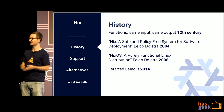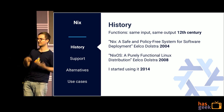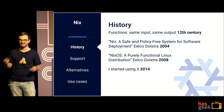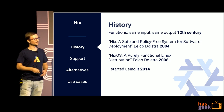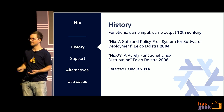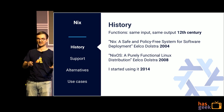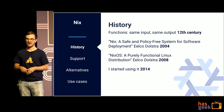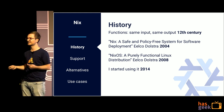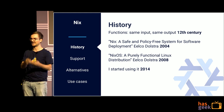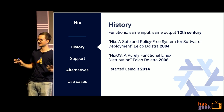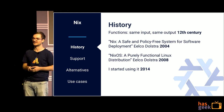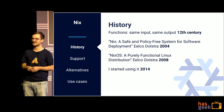There was a guy called Eelco Dolstra who was doing research, and he was interested in applying functional programming to building software. That was back in 2004 — he created the idea of Nix, which was an application of taking functions and applying them to build. Four years later, he evolved that idea of Nix so far that he was able to build a Linux-based operating system on top of it. It wasn't a very advanced operating system, but he got it — he progressed the idea fast enough to get an operating system built on top of that.